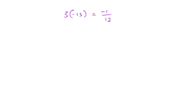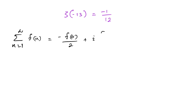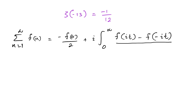We begin with the Ramanujan summation formula for divergent series, which we also used in a previous video. The formula states: the sum of n from 1 to infinity of f(n) equals minus f(0) over 2 plus i times the integral from 0 to infinity of [f(it) minus f(-it)] over [e^(2πt) minus 1] dt.